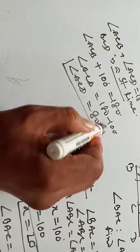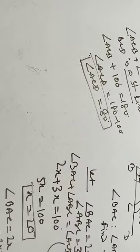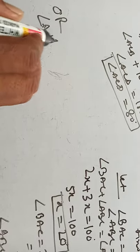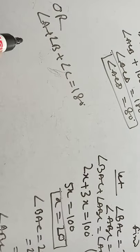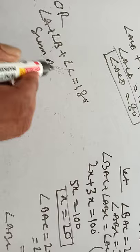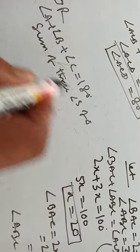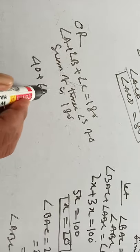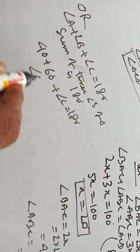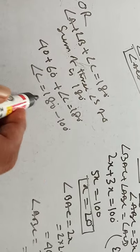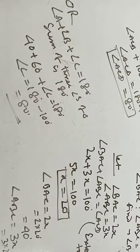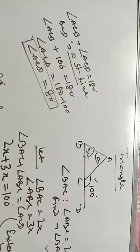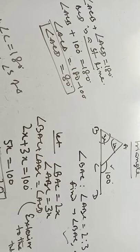Another way, you can find angle A plus angle B plus angle C equals 180 degrees, because the sum of 3 angles of a triangle is 180 degrees. Angle A you know is 40, angle B you know is 60, plus angle C equals 180, so angle C equals 180 minus 100, that means 80 degrees. This way you can also find it, because the sum of 3 angles of a triangle is 180. One triangle property is the exterior angle is equal to the sum of opposite interior angles.